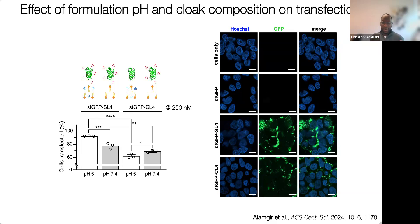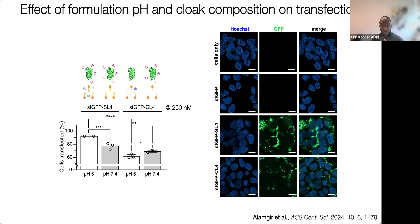We know we can transfect cells with our SL4 sulfonate probes, which are superior to carboxylate probes at both pH 5 and 7.4 formulation pHs. Seeing is believing — we also see this if we look at cells by confocal microscopy. Cells alone in the GFP channel — no signal. SFGFP alone — no signal. But in the presence of SL4, you see robust transfection showing green signals. The blue is a Hoechst dye showing nuclei. With CL4 you still get some transfection when cloaked with carboxylates, but just not as robust as with the sulfonate charges.